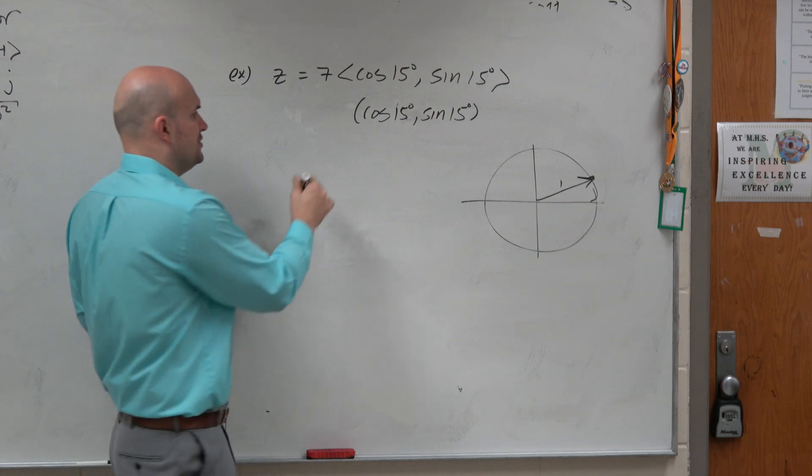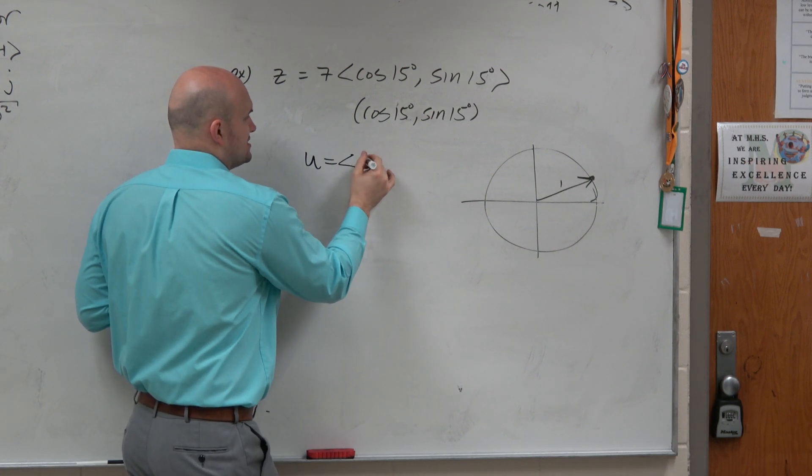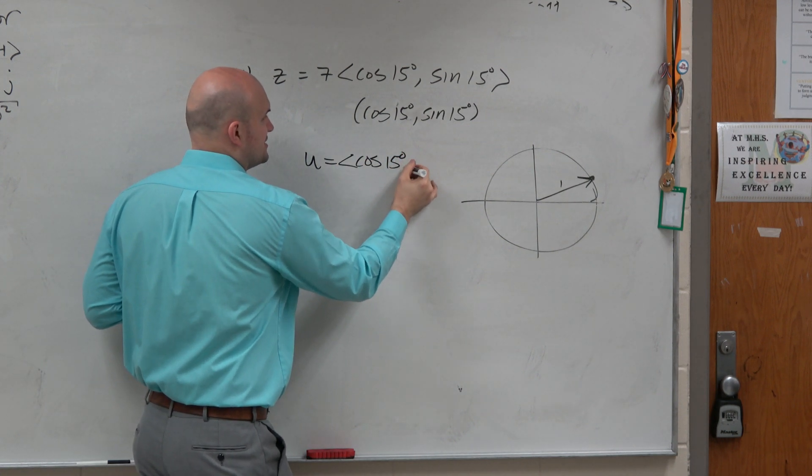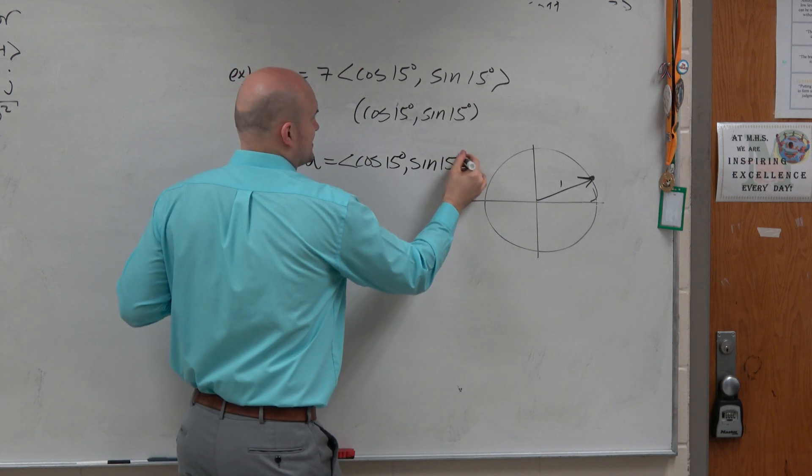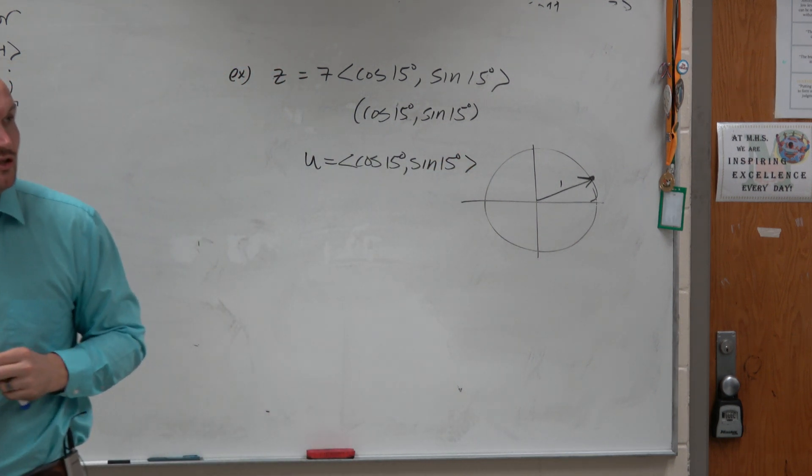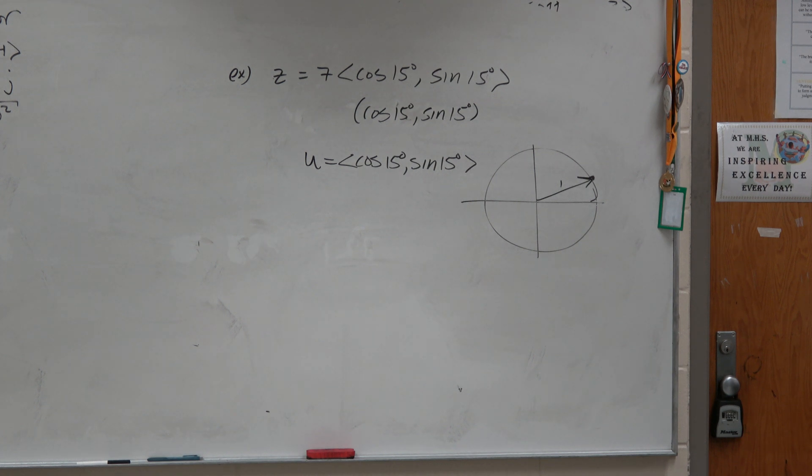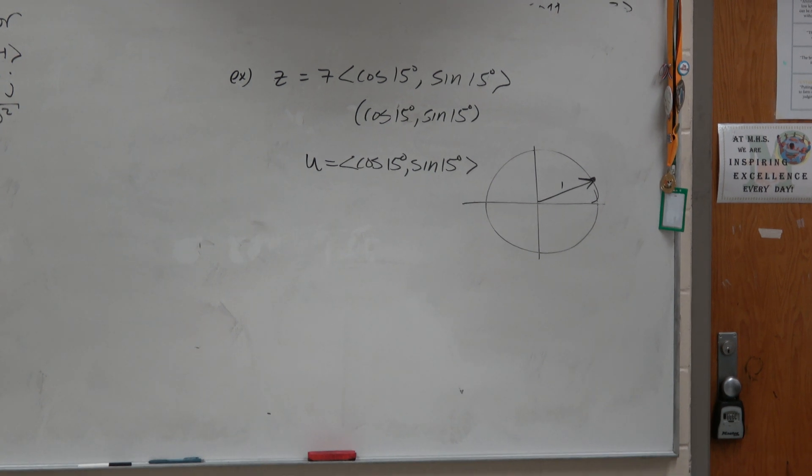So therefore, our unit vector is just cosine of 15 degrees, sine of 15 degrees. And that's what the unit vector is so helpful with, guys, is if we know what the unit vector is,